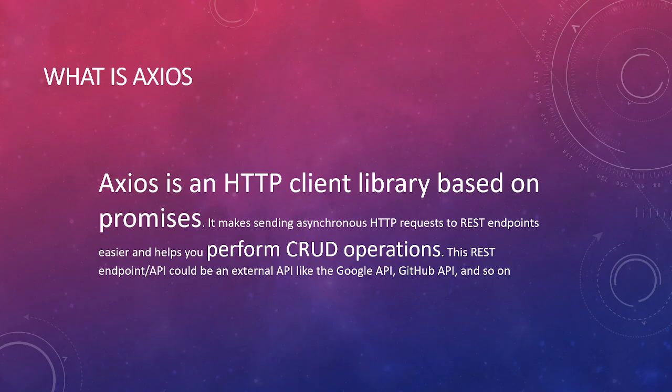Axios is actually a client library based on promises. Promises are when we do not get data from the request immediately — we perform then operations, like: after making a GET call to get users, if we get the user, what action do we perform next? If we get the data, what do we do? If we get an error, what do we do? Axios makes sending asynchronous requests to API endpoints easy, and those endpoints could be external APIs like Google, GitHub, or any test API.